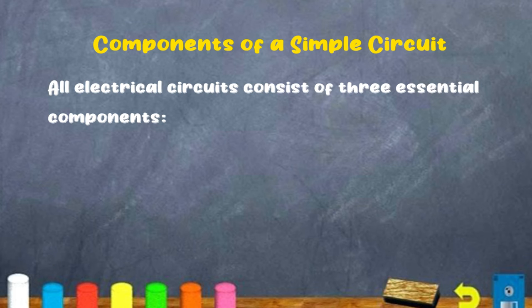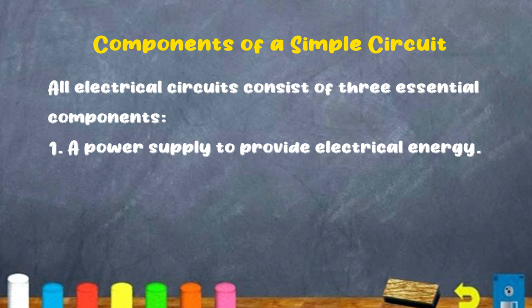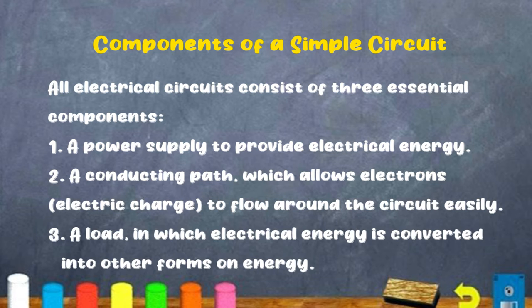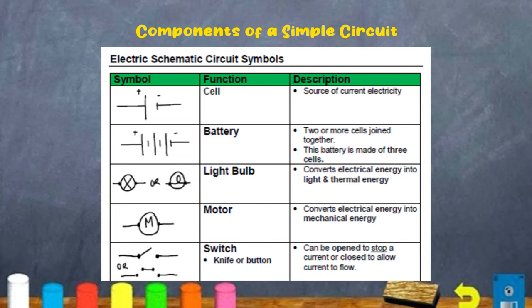All electric circuits consist of three essential components. The power supply is used to provide electrical energy. A conducting path allows the electrons to flow around the circuit easily. Please note that electrons are negatively charged. Now, there's also a load, which electrical energy is converted into another form of energy. When we talk about a load, we're simply saying maybe a light bulb. Now, boys and girls, I would like to direct your attention to the screen to examine the components of a circuit to look at their symbol, their function, as well as description.